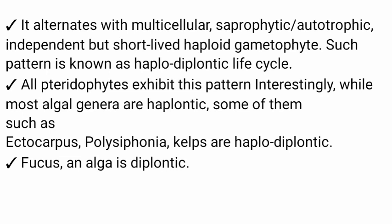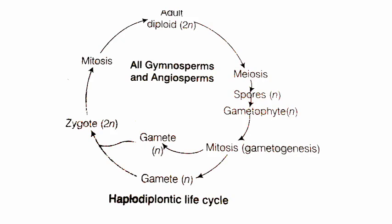To summarize the algal examples: brown algal species such as Ectocarpus, Polysiphonia, and other kelps show the haplodiplontic life cycle, while Fucus is the alga that shows the diplontic life cycle. Most pteridophytes also exhibit the haplodiplontic pattern. Let's check the diagrammatic representation of the haplodiplontic life cycle.